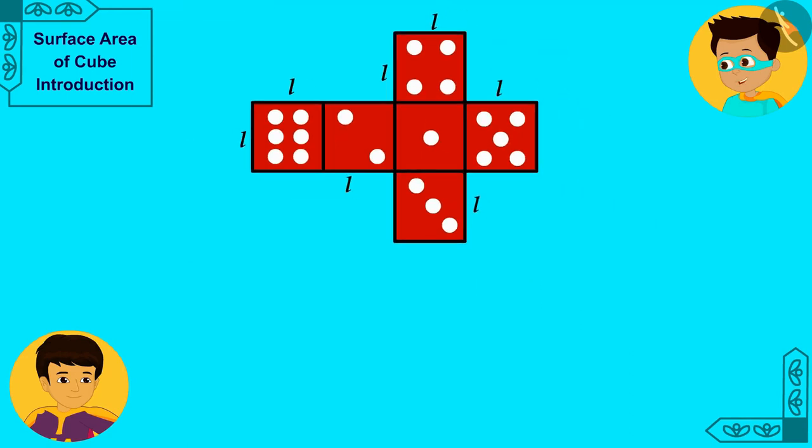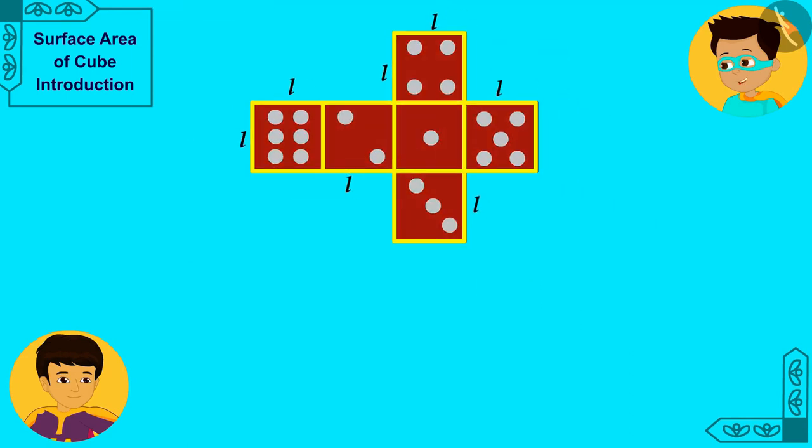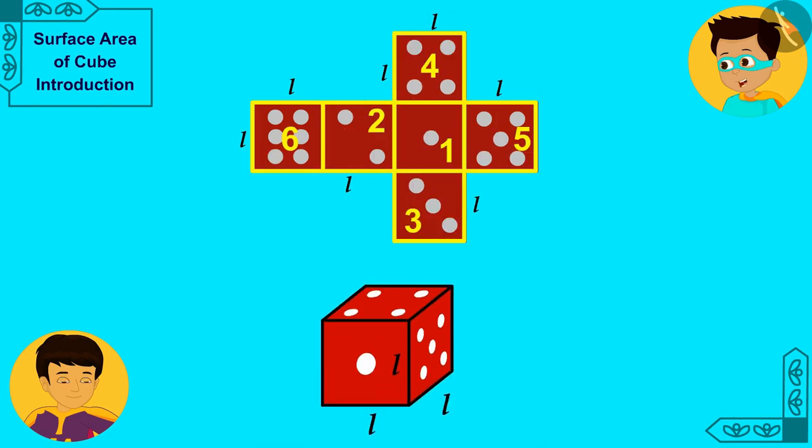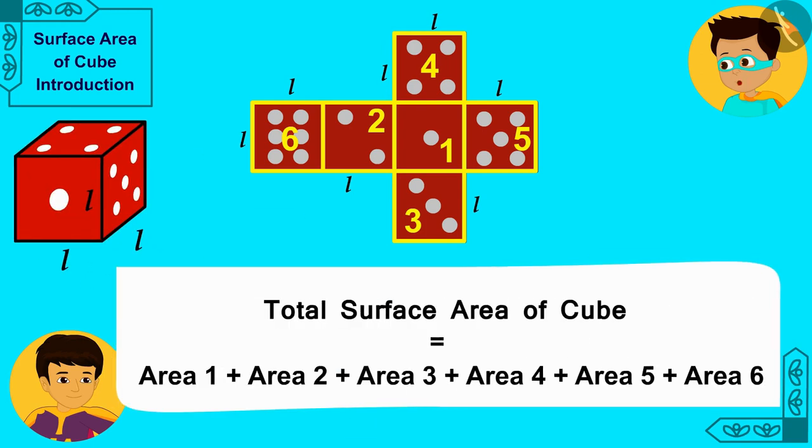Hey wow! So if we add the areas of all these faces, then we will know how much paper will be required to cover it completely. But, the sum of all the faces of this cubic dice will be equal to its total surface area. Right?